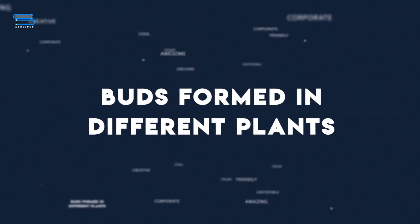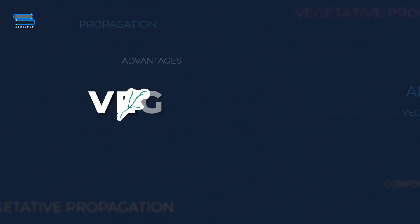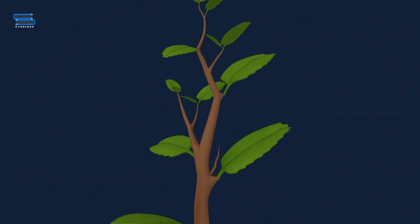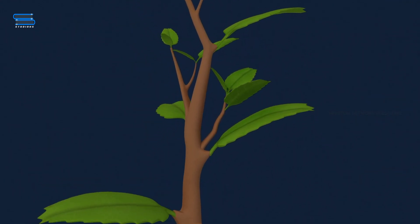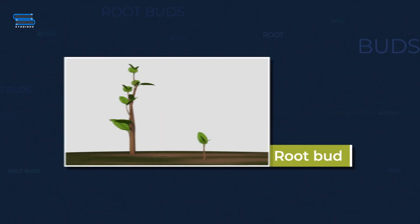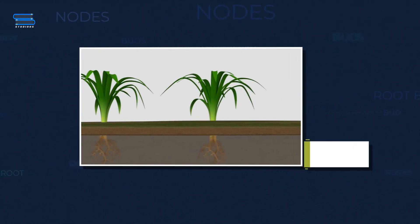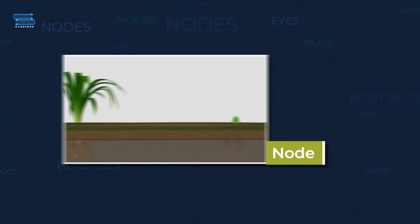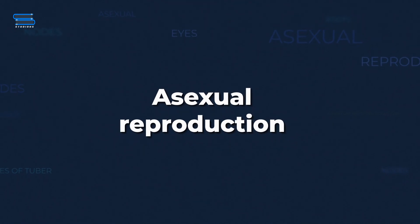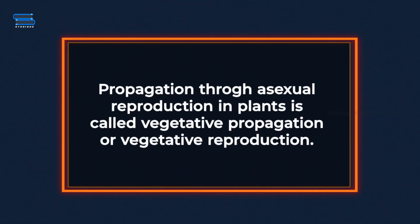Buds formed in different plants demonstrate vegetative reproduction. Vegetative propagation is routinely done and is preferred by many plants. Some flowering plants propagate by specialized structures. This method of reproduction is asexual, with no involvement of male and female gametes. This method of propagation in plants is called vegetative propagation or vegetative reproduction.